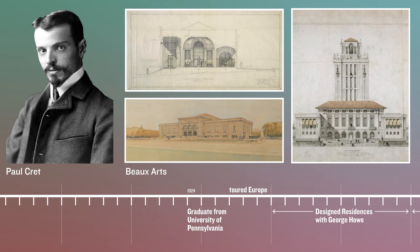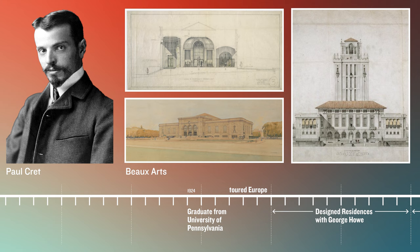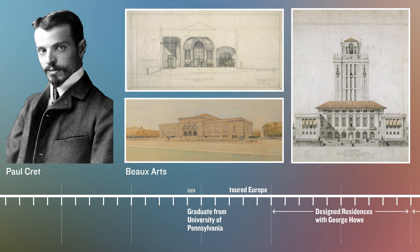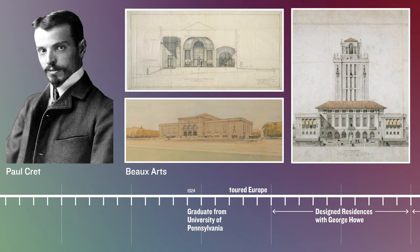At UPenn he studied under Paul Cret in a style of instruction called Beaux-Arts, where students would recreate and render notable works of the past, absorbing their ancient lessons through imitation to understand classical principles of symmetry and proportion which underlie building plans and facades. This form of study would influence his approach even with his more modern designs.